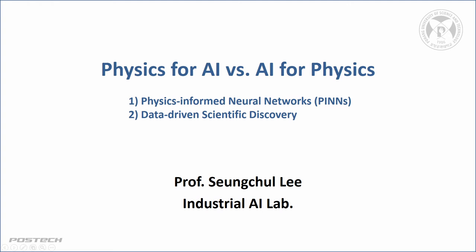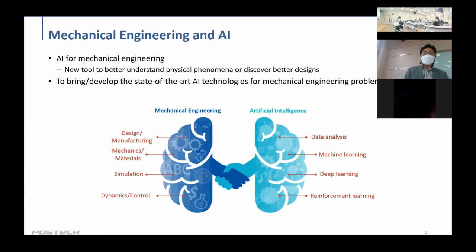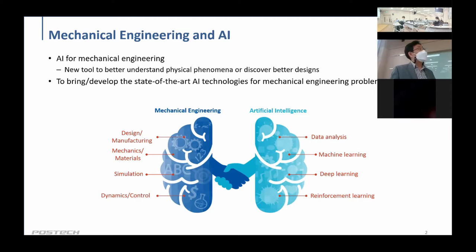Before jumping into today's talk, I want to take a moment to think about mechanical engineering and AI. As you all know, it covers design and manufacturing problems, mechanics, materials, simulations, and dynamic controls. On the AI side, we have data analytics, machine learning, deep learning, and reinforcement learning. We all believe AI is going to be a new tool to better understand physical or mechanical behaviors or to discover better design schemes. My main motivation is to develop state-of-the-art AI knowledge for mechanical engineering problems.